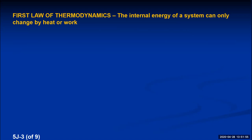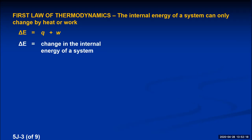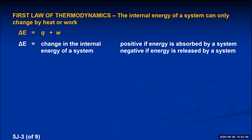This brings us to the first law of thermodynamics: the internal energy of a system can only change by heat or work. Written algebraically: delta E equals Q plus W. The sign of delta E is important — positive means energy flowed into the system, negative means energy flowed out. So delta E is positive if energy is absorbed by the system, and negative if energy is released by the system.